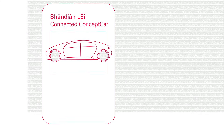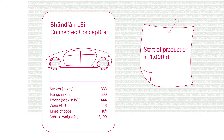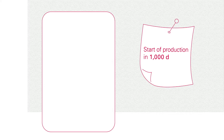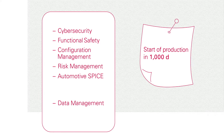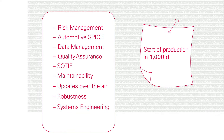Your engineering and software developer team is up and ready to get started. Develop this car in 1,000 days. Here you go with the high-level features and product vision. But wait, what about constraints? How to ensure compliance to regulations and standards? And how to achieve the desired product quality?